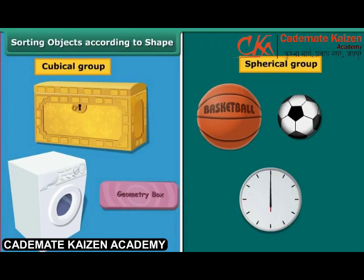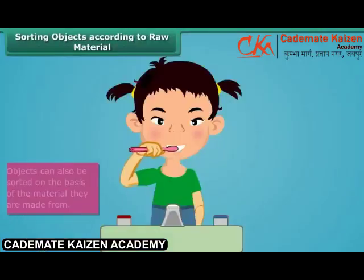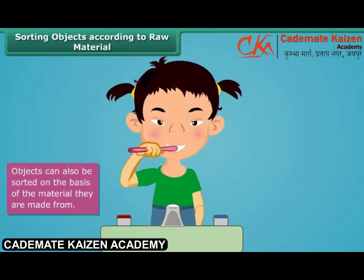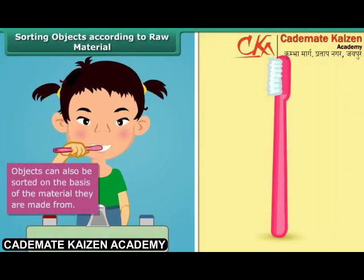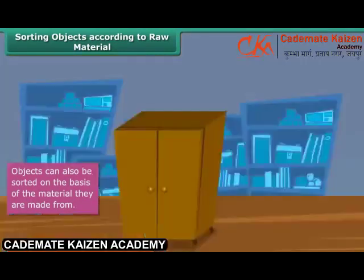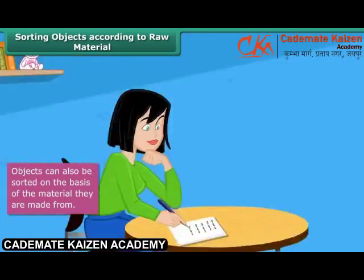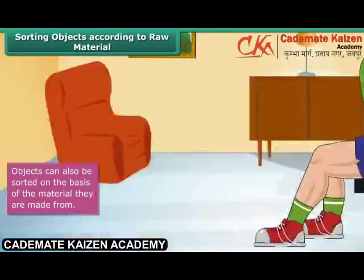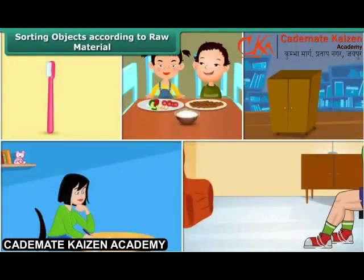The first object you use as soon as you wake up is your toothbrush — it is made of plastic. The plate you have your breakfast in is made of melamine or stainless steel. The cupboard you keep your books or clothes in is made of iron or wood. The books that you read are made of paper. The shoes you wear are made of leather, canvas, or rexin. Thus, all objects we use in daily life can be classified on the basis of the raw materials used in making them.